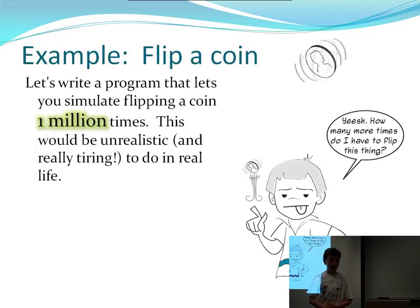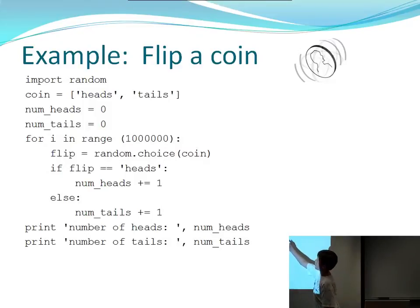So here's an example. Let's write a program that lets you simulate flipping a coin a million times. That would probably be unrealistic and really tiring to do in real life. So first, of course, we have to import random like at the start of any program. And I'm going to set a coin, the two options, to heads and tails. And the number of heads right now is zero because we haven't flipped a coin yet, and so is the number of tails that comes up.